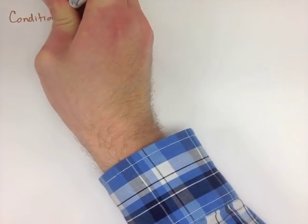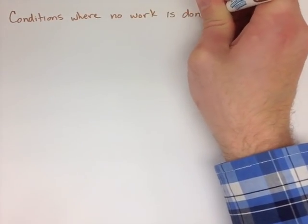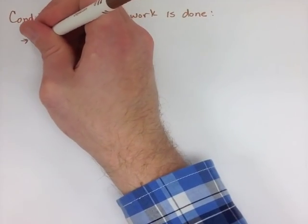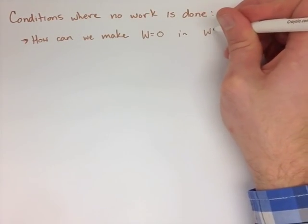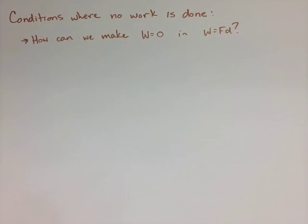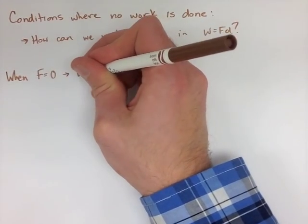Now there's three conditions that we're going to look at that make our work equal to 0, or no work is being done. So what we have to do for this to be accomplished is have our work formula be equal to 0.